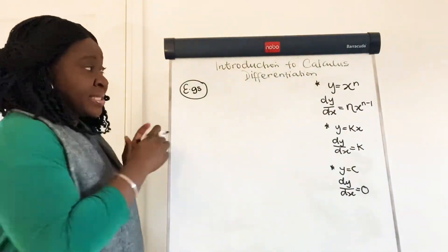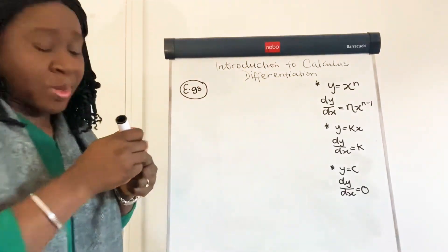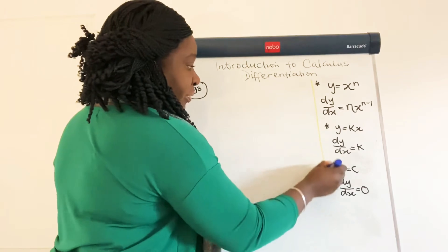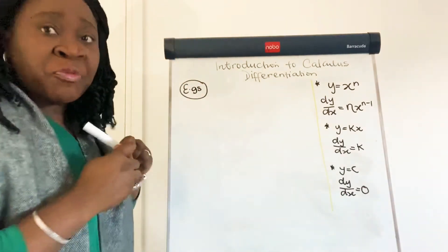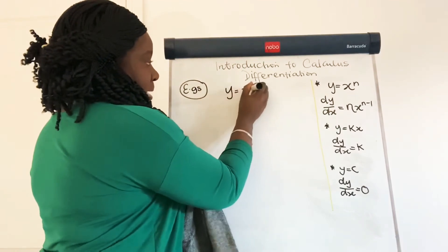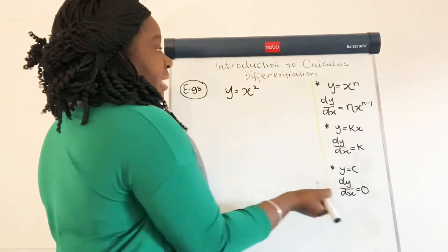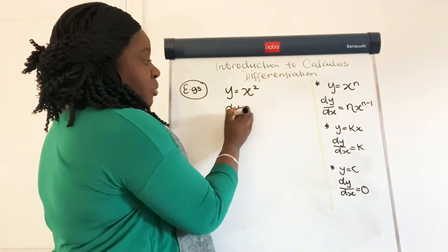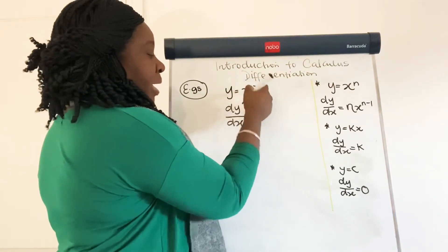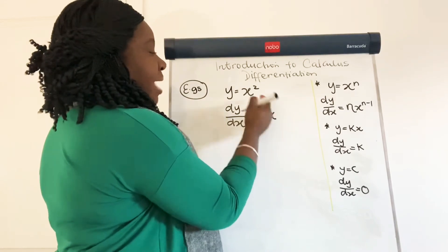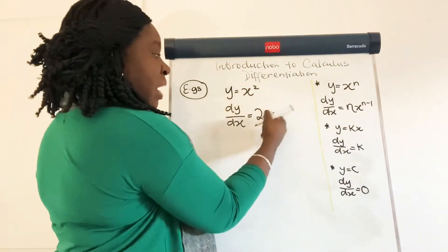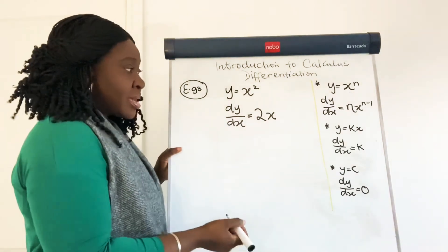Let's look at some examples. If we have y is equal to x squared, then using this first rule, dy by dx would be equal to: if we times it by the power, the power is 2, so we get 2x. And if we reduce the power by 1 — n minus 1 — then that would be 1, and we can just leave it as 2x.